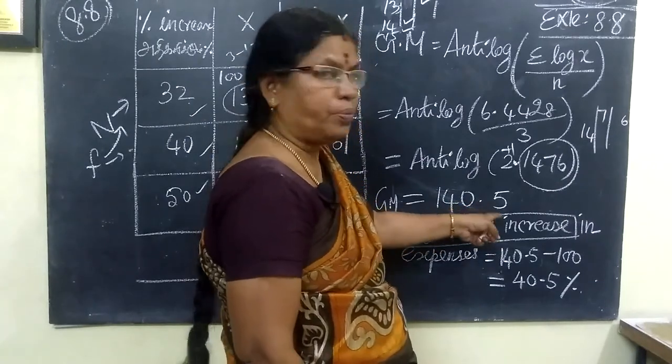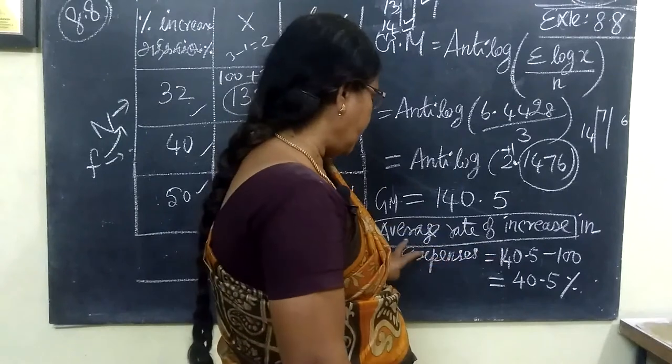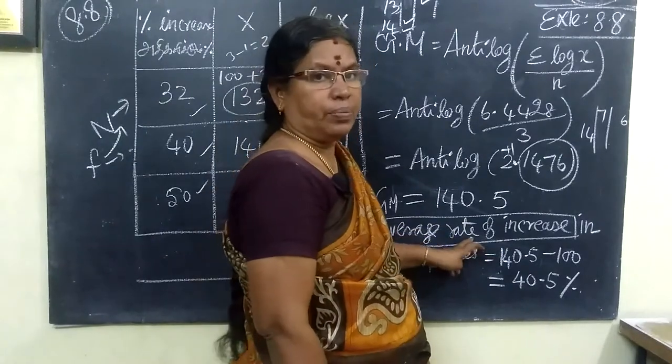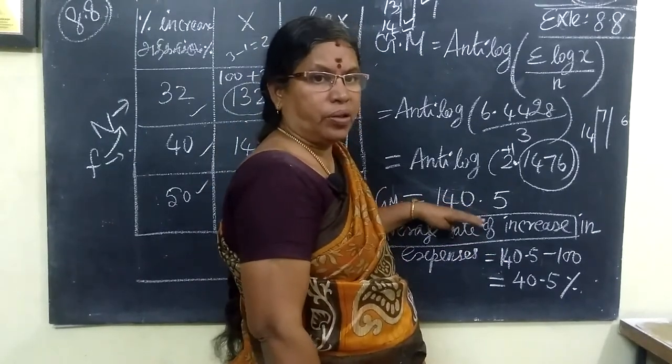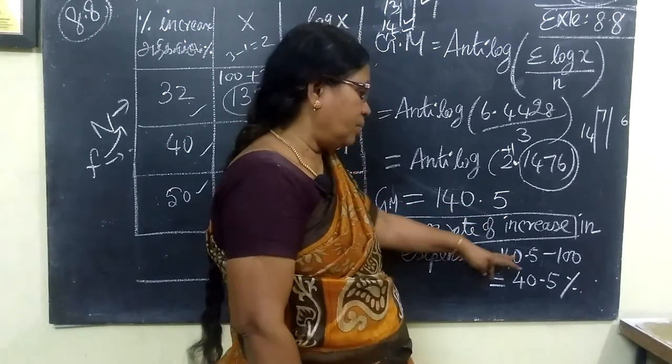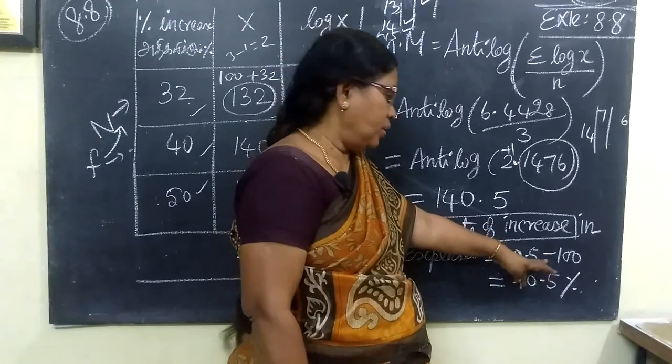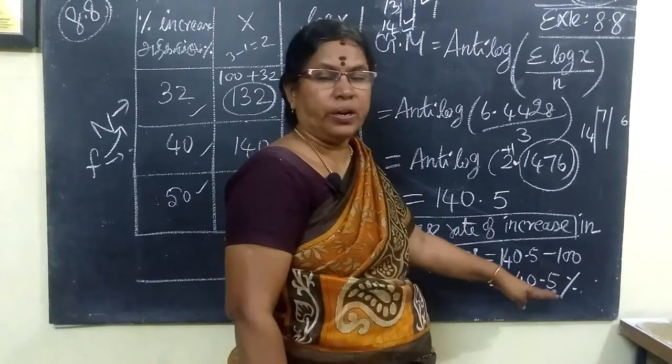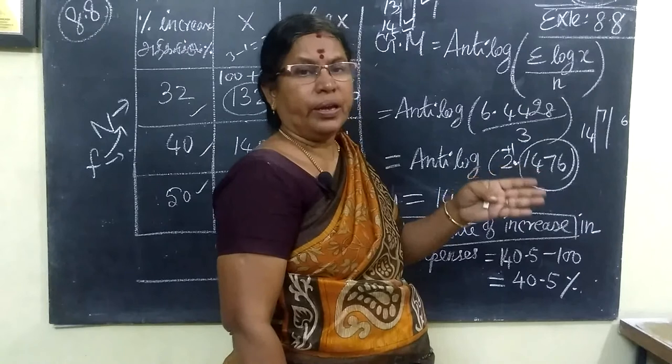The geometric mean is 140.5, but to find the average rate of increase, we use GM minus 100, which equals 40.5. That is the average of 40.5% increase every year. Thank you.